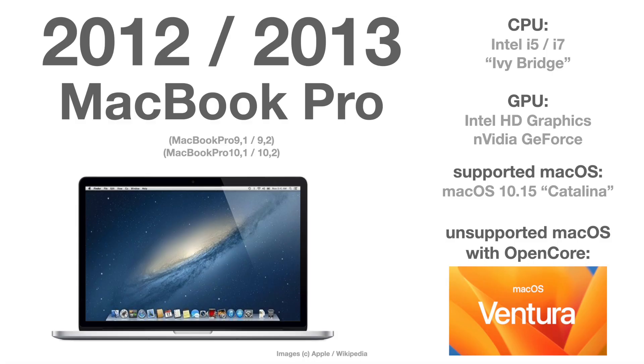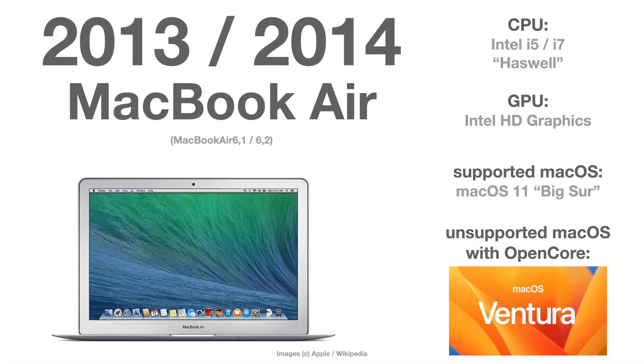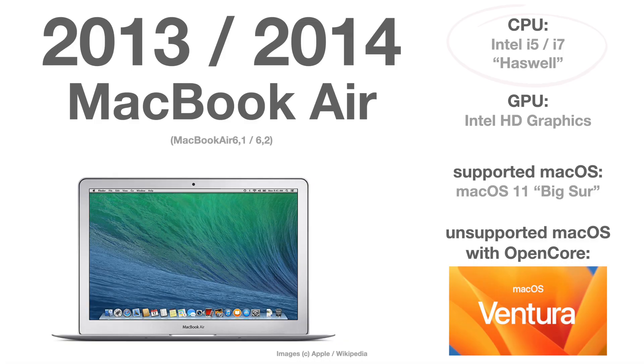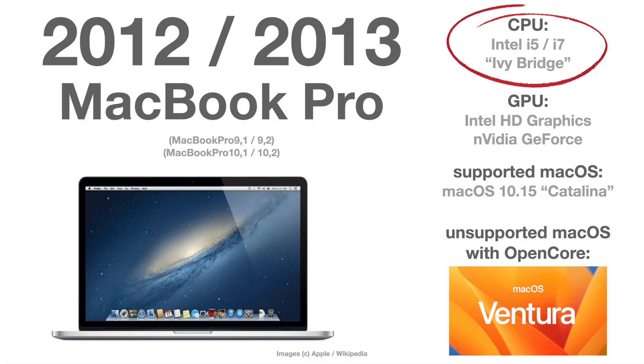To find out if you can safely update unsupported Macs, I have my two old MacBooks here. The first one is a MacBook Pro from 2012 and the other is a MacBook Air from 2013. The MacBook Air from 2013 has a fourth-generation Intel chip — a Haswell chip — while the MacBook Pro has a third-generation Intel chip, which is pre-Haswell.